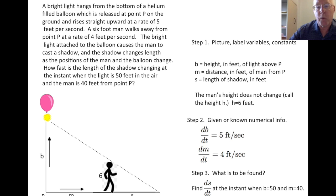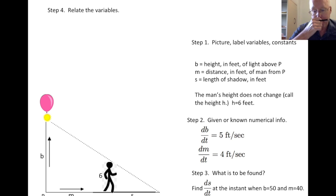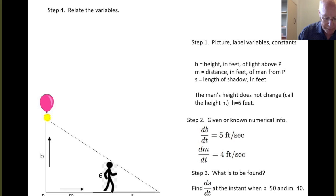Okay, so having decided what quantities we are given, we've labeled the variables. We've identified what we want to find and the instant in which we want to find it. It's now time to take a look at a relation between the two variables. Or in this case, it's three variables. So we have B, M, and S. Okay. So we've got those quantities labeled in the picture. Again, M is part of this horizontal segment from P out to the man. And then S is the other part of the segment from the man out to the point where the beam of light from the light finally clears the man's head.